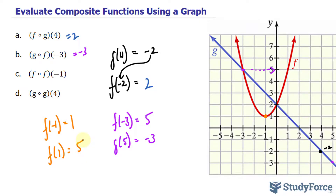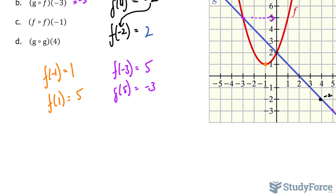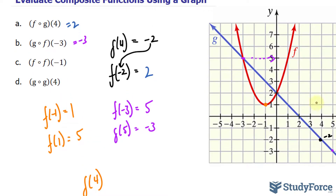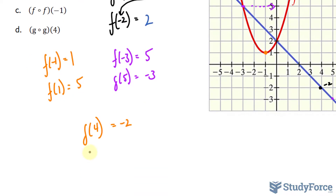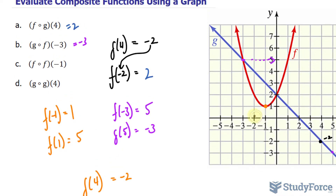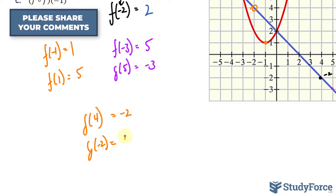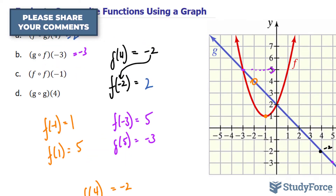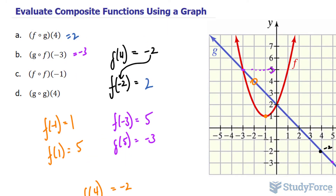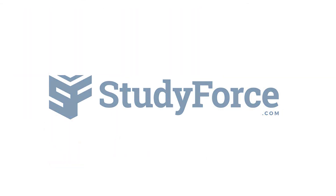Question D, the very last one: g composed of g at 4. So let's find out what g at 4 is first. g at 4 happens to be negative 2. And now g at negative 2, moving over here, we have a positive output at 4. And there you have it — that is how to evaluate composite functions using a graph.